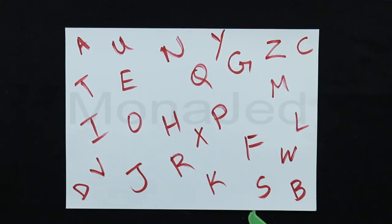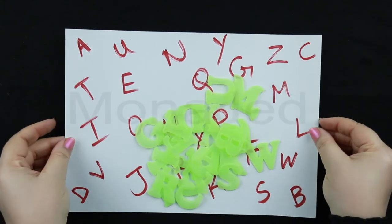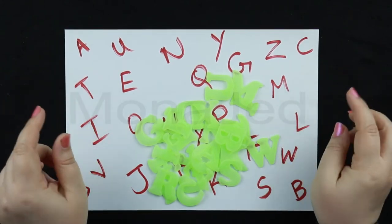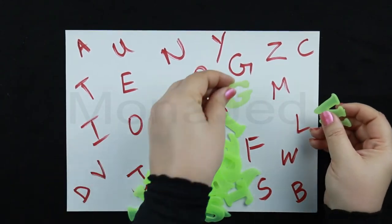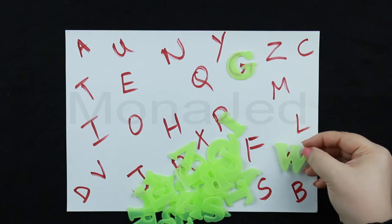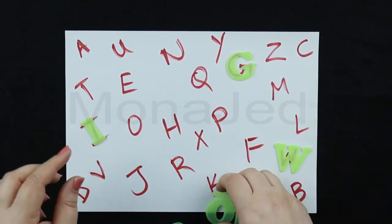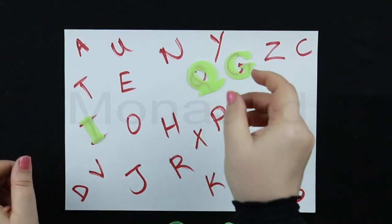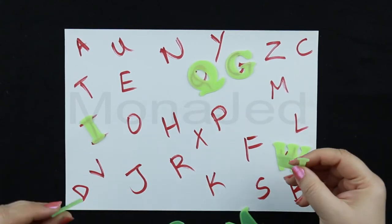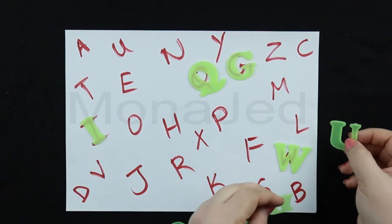So this is a very simple activity of letter matching and recognition. And then using the glow-in-the-dark alphabets, just have a fun activity. So simple. G, W, I saw an I here, I saw a Q here. A, B.